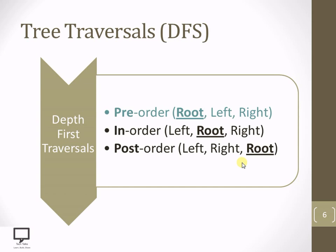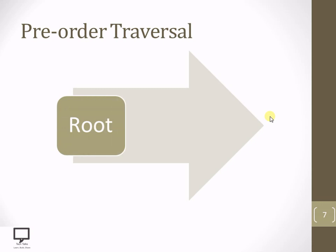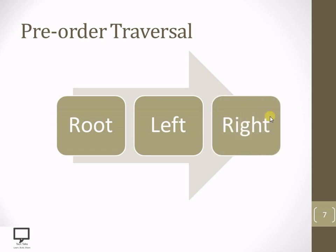Now let's start with pre-order traversal. In pre-order traversal we follow the sequence starting from the root node, then process the left subtree, and then at the end process the right subtree. This sequence is root, left, right.